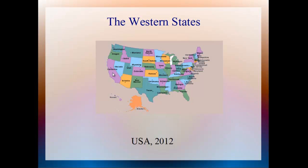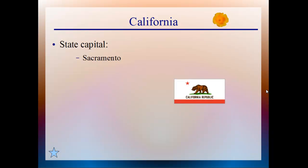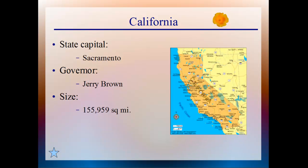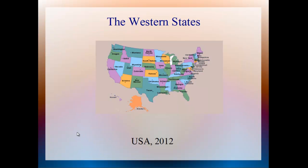We click on California and move to the California slide, and the items in the slide appear in an animated or dynamic way when I click the space bar. The flag disappears and the map appears. I've added interactivity when I click the state flower, and when I click this, back to the home slide.